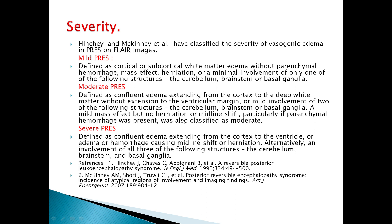If parenchymal hemorrhage is present, it is also classified as moderate PRES. Severe PRES is defined as confluent edema extending from the cortex to the ventricle, or edema and hemorrhage causing midline shift and herniation. Alternatively, involvement of all three structures — cerebellum, brainstem, and basal ganglia — qualifies as severe PRES, which carries a poor prognosis.